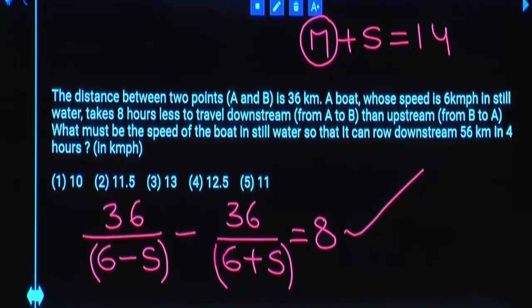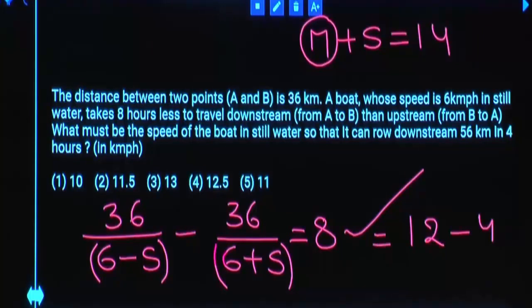If S equals 3: 6 minus 3 is 3, and 36 divided by 3 is 12. Then 36 divided by 6 plus 3, which is 9, gives 4. Is 12 minus 4 equal to 8? Yes. So S equals 3.